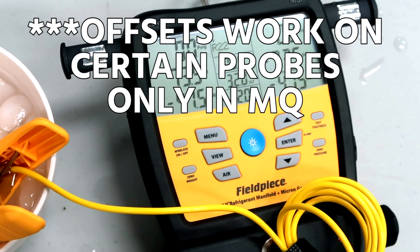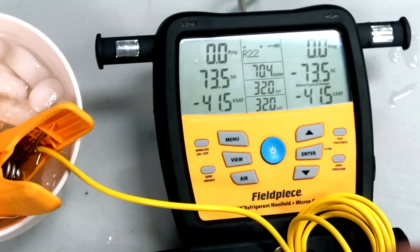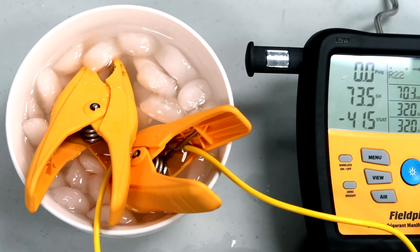You can go through Measure Quick and do some offsets on temperature and pressures as well. That's a really important piece of what we do, just making sure that we start off as accurate as we can be. Thanks for watching.